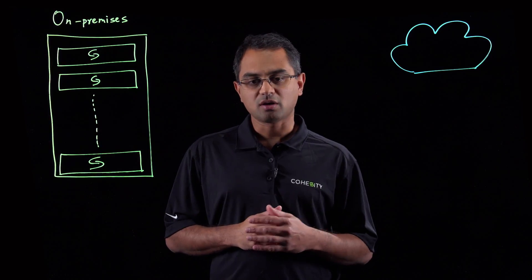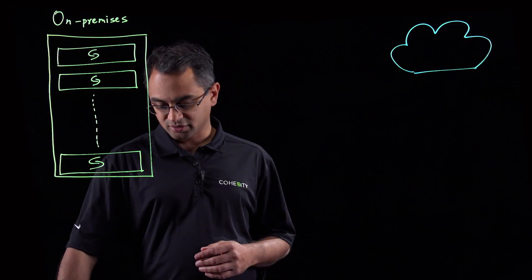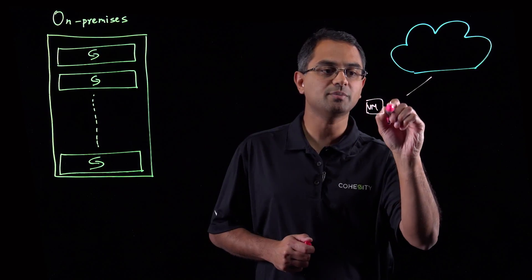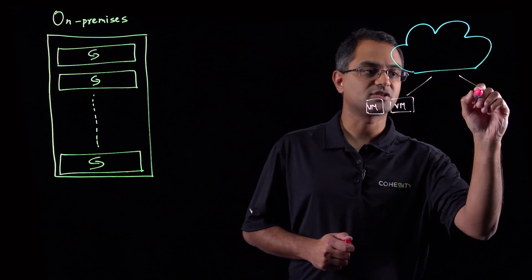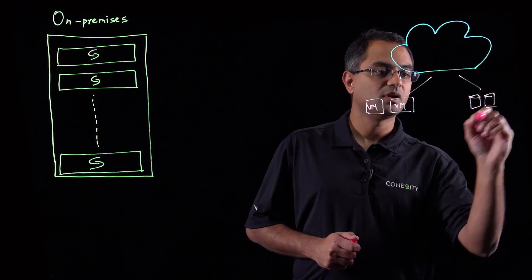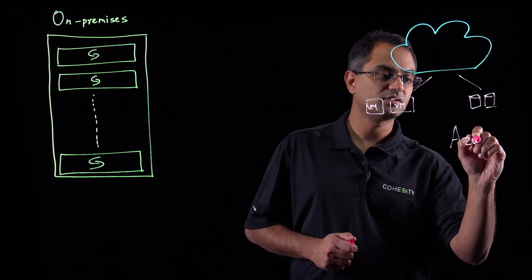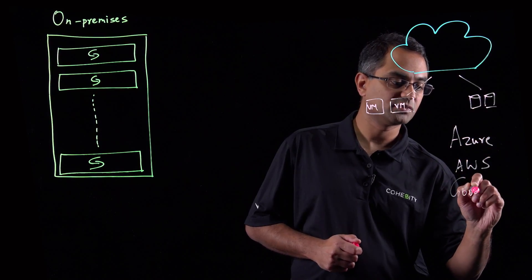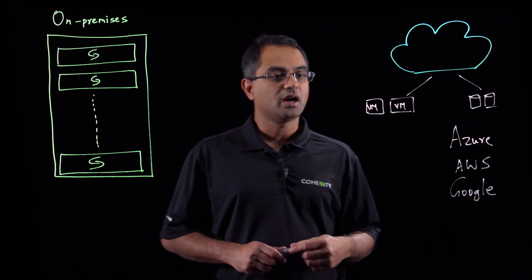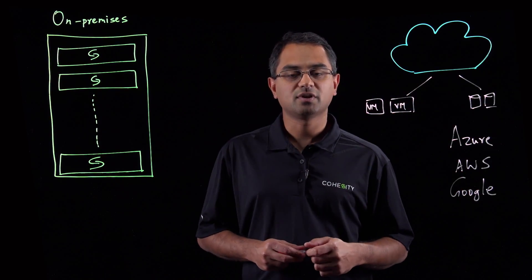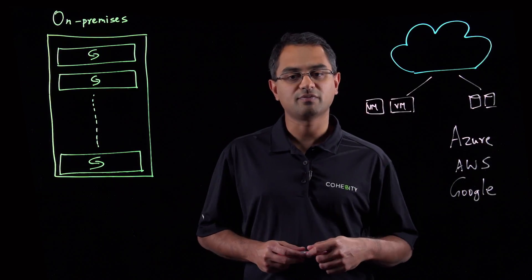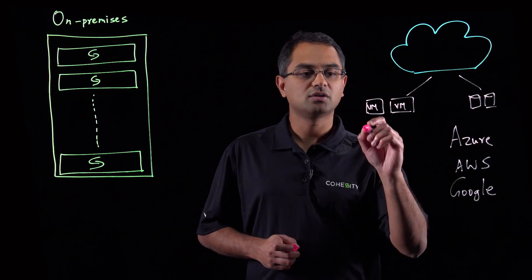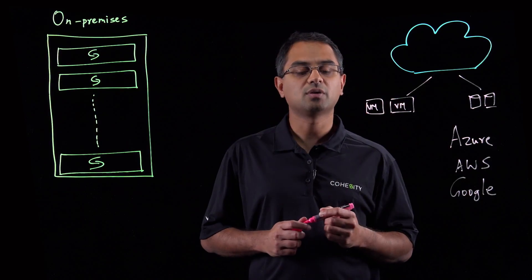In another video, we talked about two kinds of infrastructure that cloud vendors provide: the compute, which is typically used for running VMs, and the storage infrastructure. We covered Azure, AWS, and Google — broadly the three major public cloud vendors. From a storage perspective, there are two areas, cloud tier and cloud archive, that we integrate with the cloud storage infrastructure. In this talk, I want to focus on how we can leverage the cloud from a compute standpoint as well.